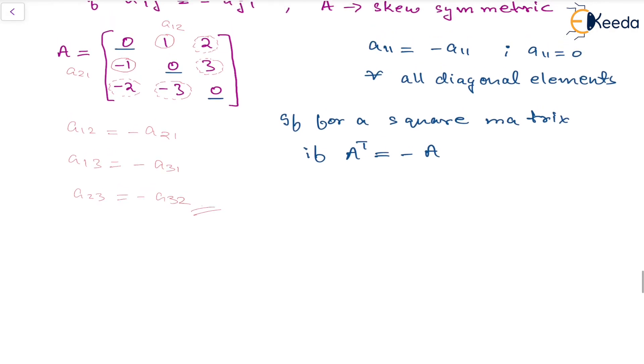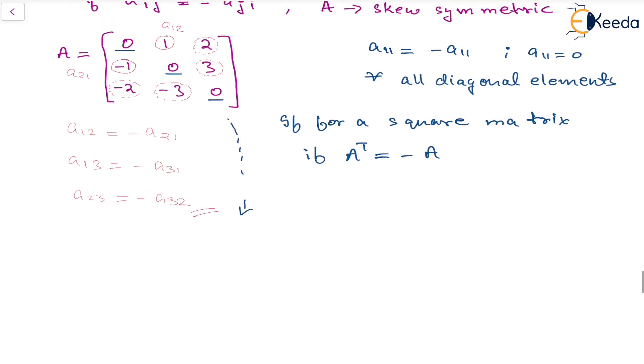Just to verify this, we can try to find the transpose of this. So putting row 1 in column 1, we will have 0, 1, 2. Putting row 2 in column 2, we will have minus 1, 0, 3. And putting row 3 in column 3, we will have minus 2, minus 3, 0. And we can clearly say this is negative of 0, 1, 2, minus 1, 0, 3, minus 2, minus 3, 0, which is simply negative of A.